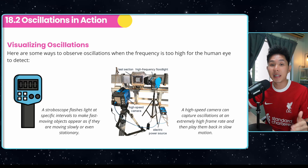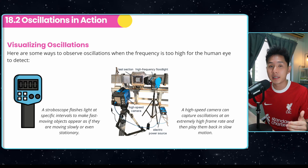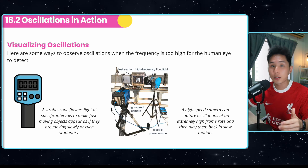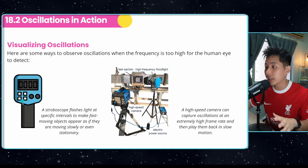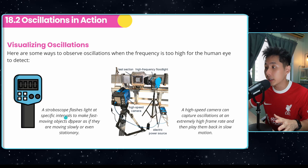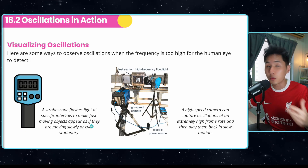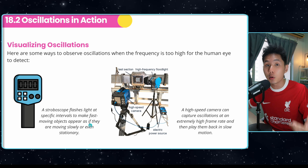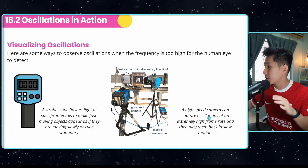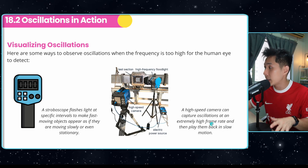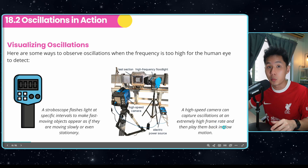Because oscillations happen at such a fast speed, a few pieces of equipment are needed to visualize them. The first one is a stroboscope — it flashes light at specific time intervals to make fast-moving objects appear as if they are moving in slow motion. An alternative solution is to use a high-speed camera to capture oscillations at an extremely high frame rate, and then play them back in slow motion.